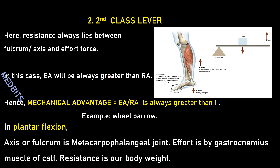Second class lever: here the resistance or load always lies between the fulcrum and the effort force. In this case, the effort arm will always be greater than the resistance arm, so the mechanical advantage (EA/RA) is always greater than one. The classic example is a wheelbarrow. Always make sure you know the human example, as exams often ask you to explain with a human example involving joints or muscles.